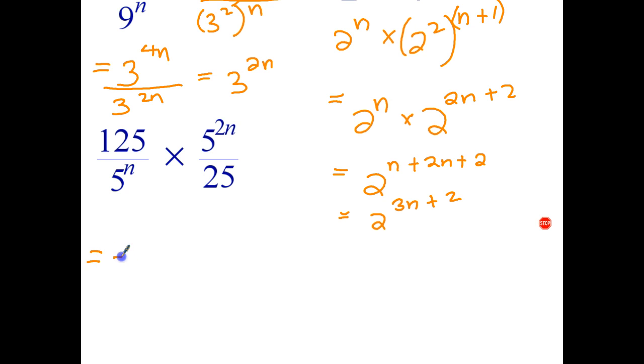Okay let's see how we went here. Well 125 is 5 times 5 times 5, or 5 to the power of 3. 5 to the n stays as 5 to the n. 5 to the 2n stays as 5 to the 2n, and 25 becomes 5 to the power of 2.